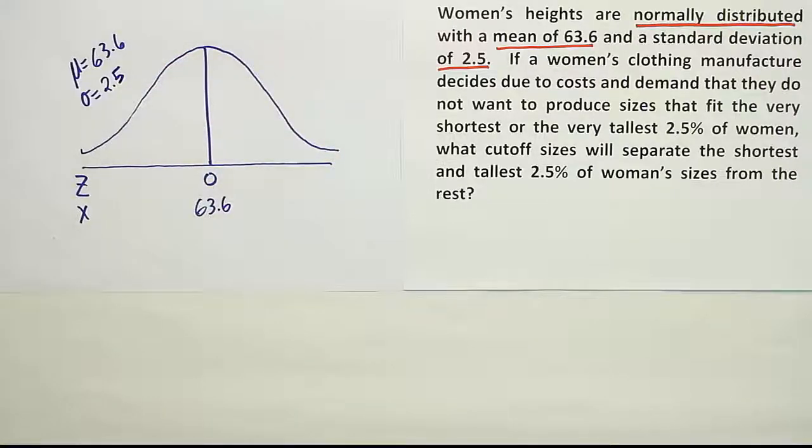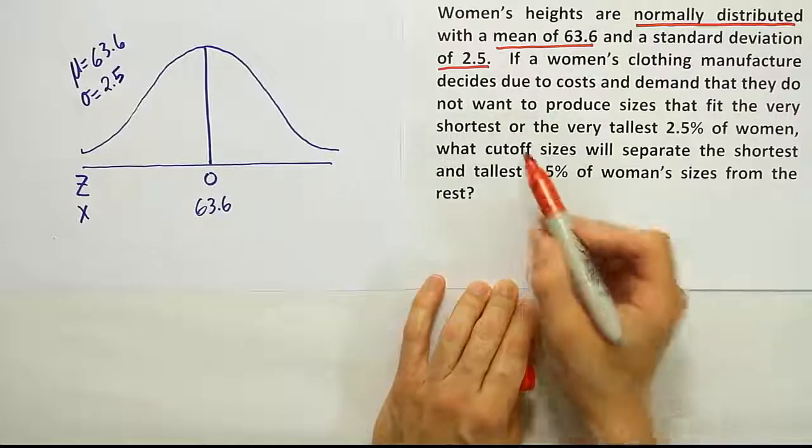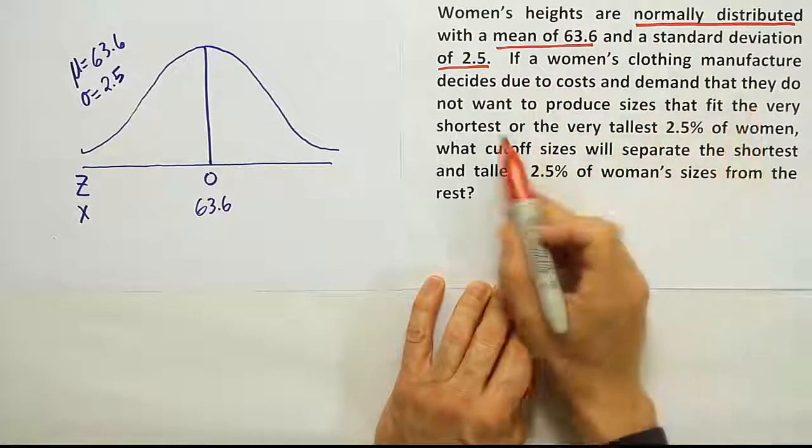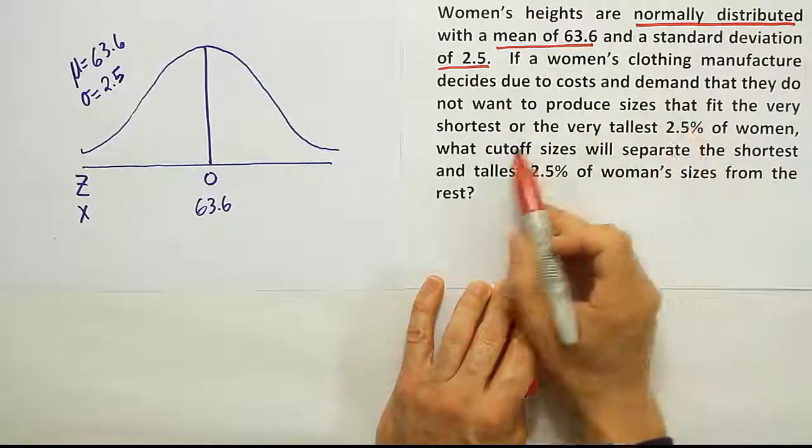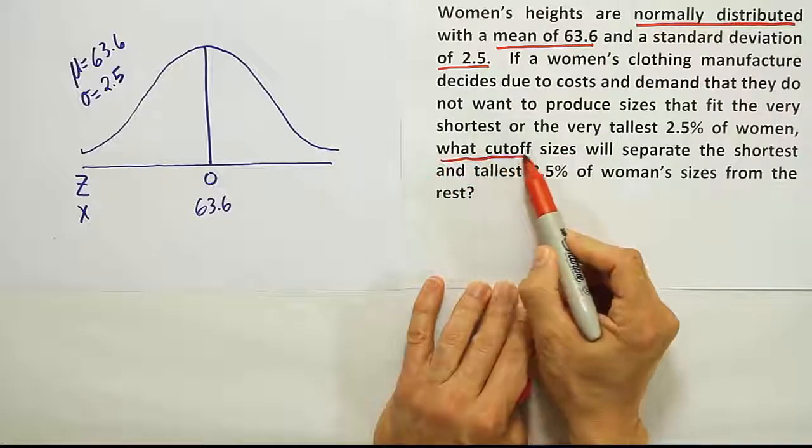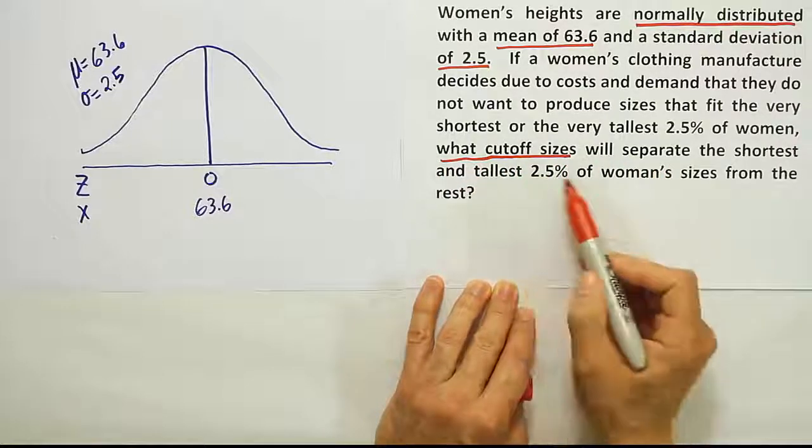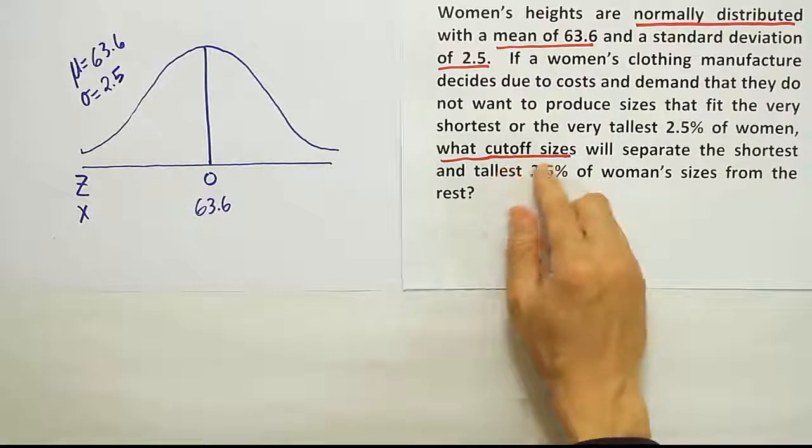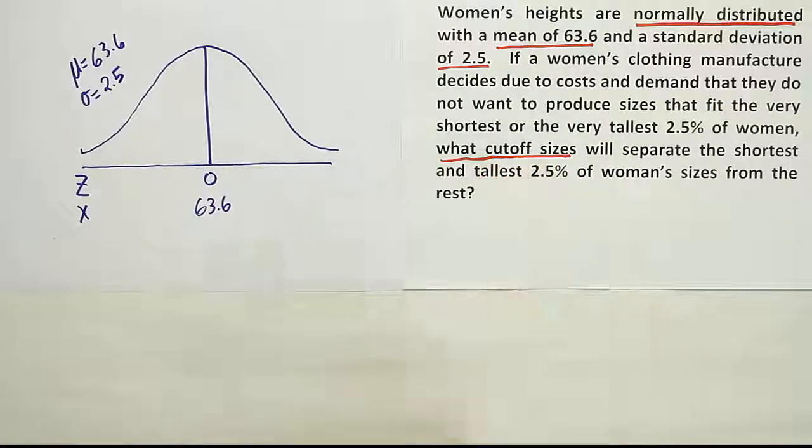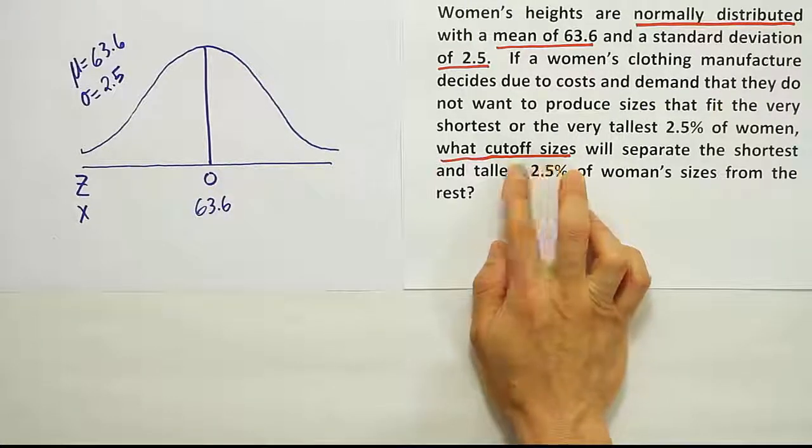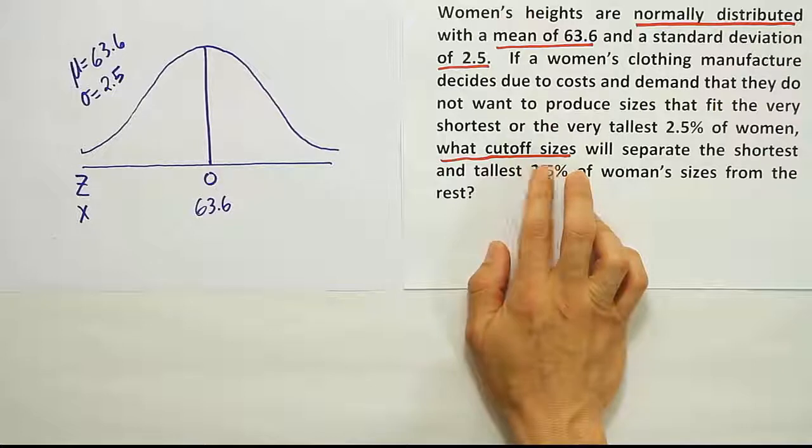Now it says if a woman's clothing manufacturer decides due to cost and demand that they do not want to produce sizes that fit the very shortest or the very tallest 2.5%, here's the important phrase: what cutoff sizes will separate the shortest and tallest 2.5% of women's sizes from the rest? What cutoff sizes will separate, right? So they're not saying what probability, they're asking for a size. So we need to figure out size in this problem, not a probability.